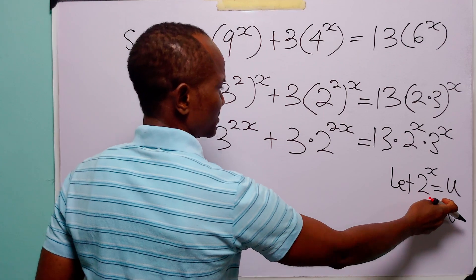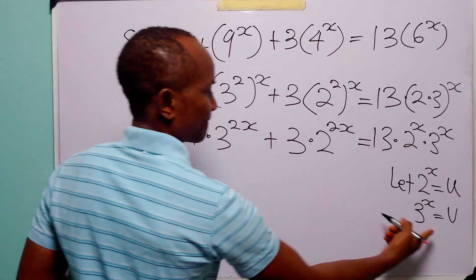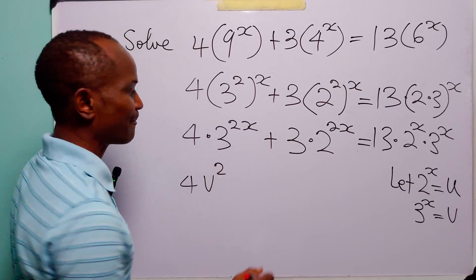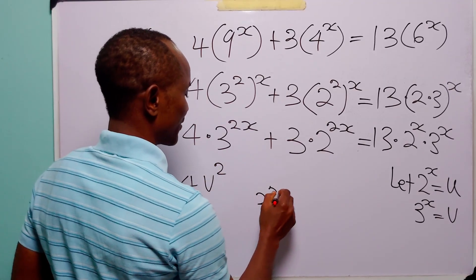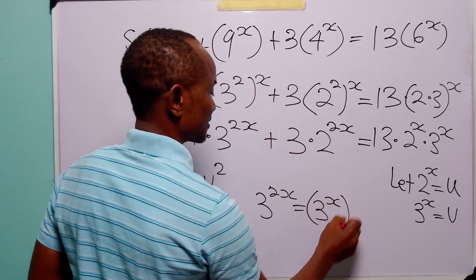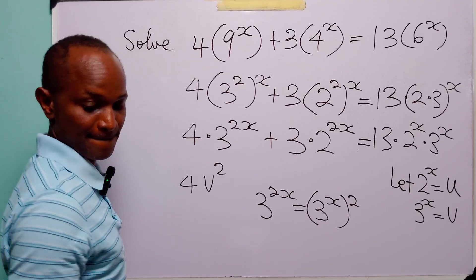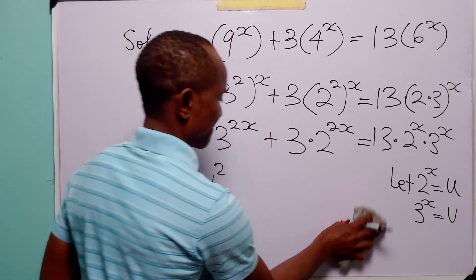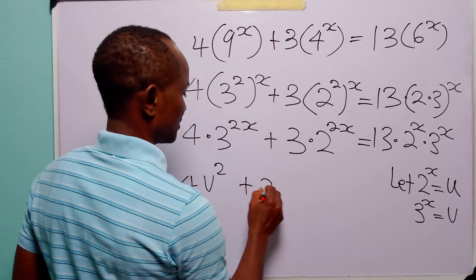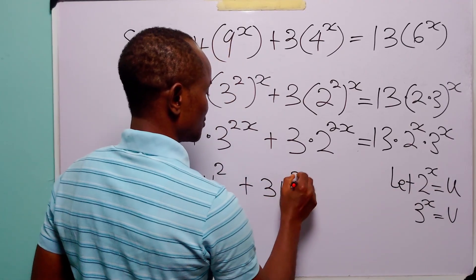With these two substitutions, this equation is now going to be 4v squared — because remember that 3 to power 2x is exactly equal to (3 to power x) squared from our laws of indices — plus 3 times u squared.